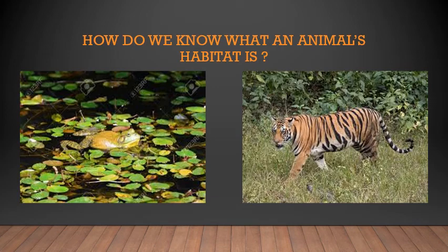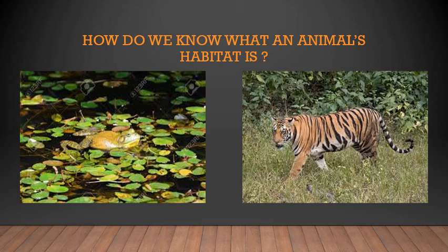How do we know what an animal's habitat is? Habitat comes in all sizes — it can be a small pond or a huge forest. The habitat of a frog is its pond. The frog lives in the pond, gets food in the pond, is safe from predators, and also reproduces in the pond. A frog does not have to leave the pond for anything — all its needs are met in the pond itself. So a pond is a frog's habitat.